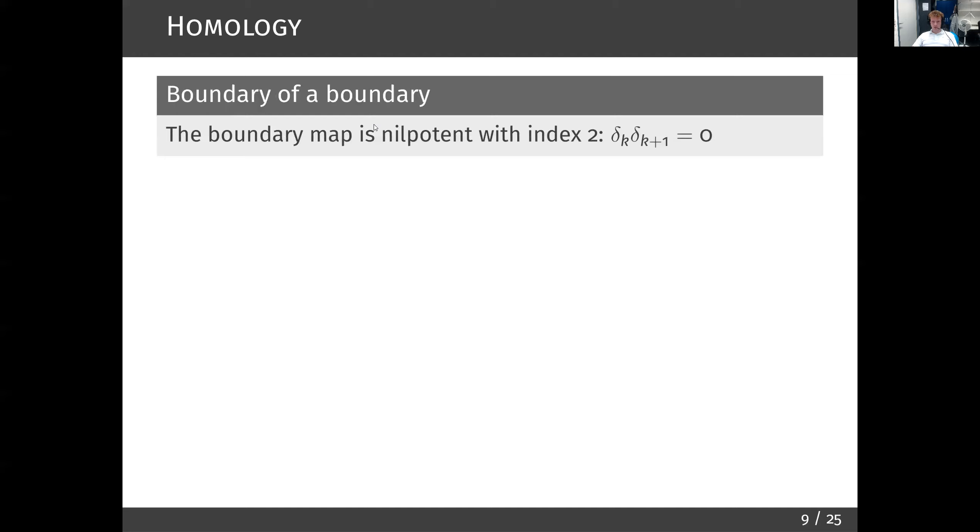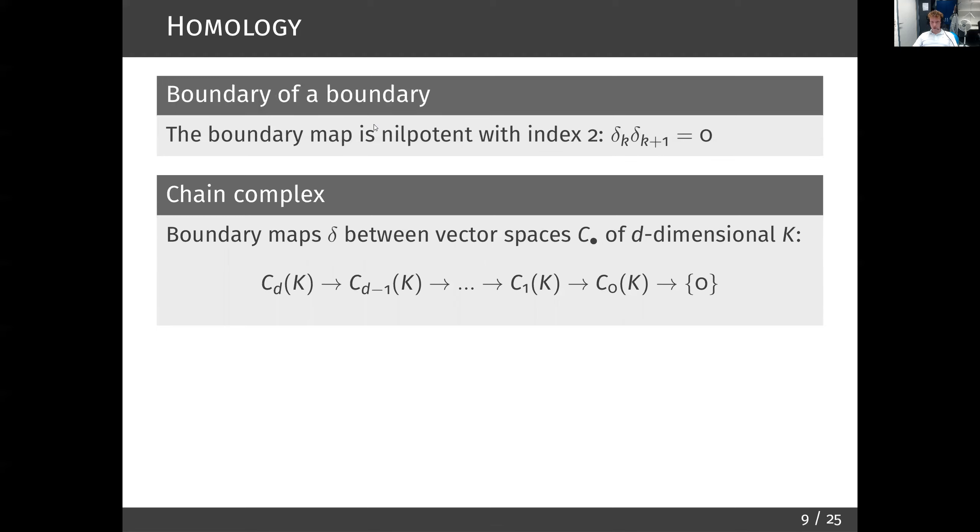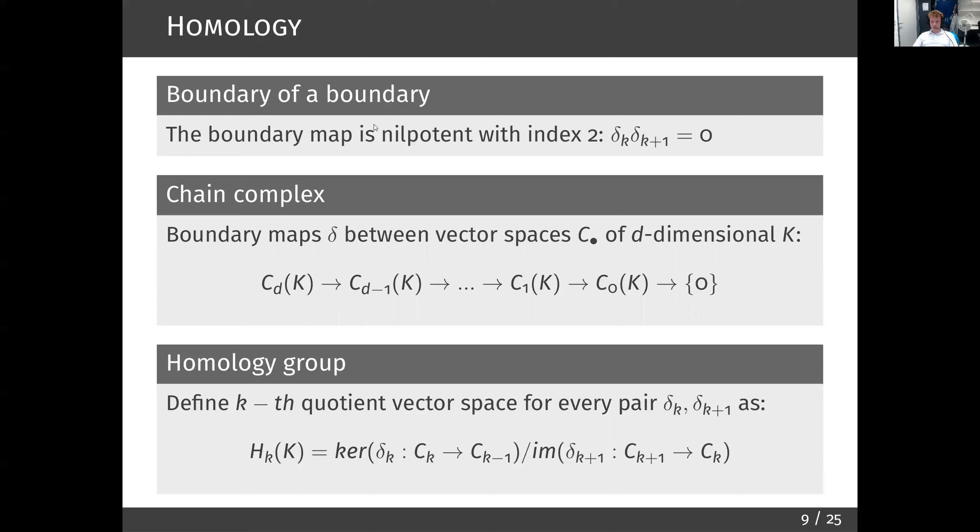The key property of a boundary map delta is that its consecutive composition is trivial. This suggests to look at a chain complex, which is a sequence of boundary maps between spaces of k chains. Some elements of the image of delta k plus 1 would also be in the kernel of delta k. Then we could define a homology group as a quotient, kernel delta mod image delta k. These notions are in fact older than the probability axioms and have found much generalization and applications in mathematics and physics over the course of the century. Yet, in the early 90s, there started to grow an increased interest in the computational aspects of homology theory. And it was around 2000 that they began to find more use in data analysis when persistence homology was introduced.